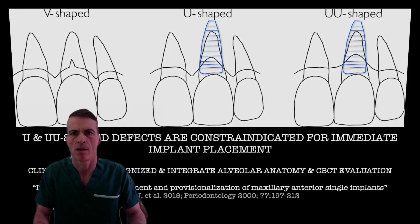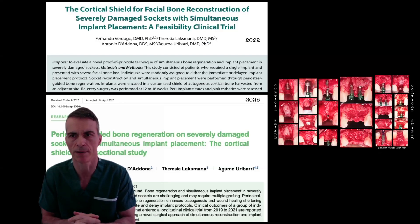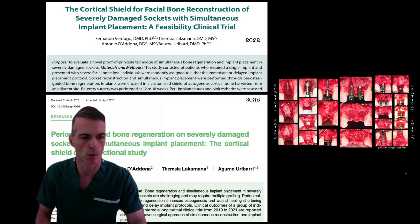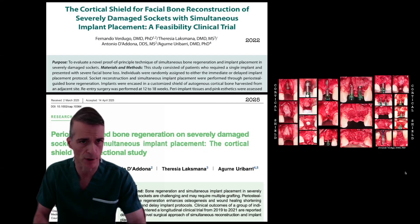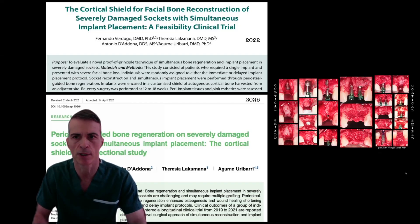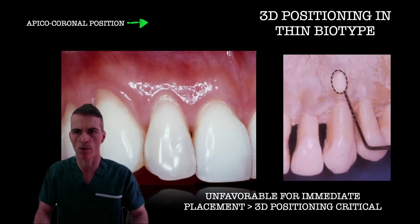We can compensate for the presence of severe buccal bone loss by doing certain techniques, such as the one we recently published in the Journal of Clinical Advances in Periodontology, following the principles of periosteal-guided bone regeneration. We can most of the time reconstruct those severe defects using the cortical shield technique. We can place the implants simultaneously and reconstruct that severe defect, especially on anterior implants, which are the ones we need to be most careful with.